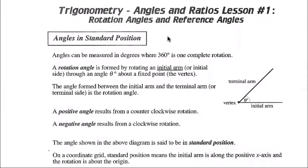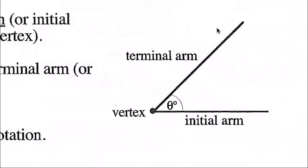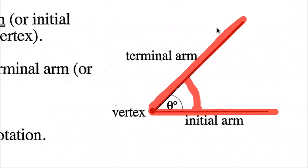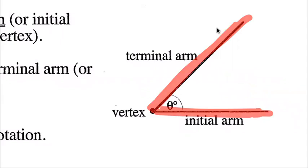A rotation angle is formed by rotating an initial arm, or initial side, through an angle theta about a fixed point, which is the vertex. So if we have this drawing of an angle, this is the initial arm, and this is the terminal arm through some degree rotation of theta. Remember theta — that fancy symbol, a circle with a line through it — that's our symbol for angle measurements. This is the terminal arm, and where those two meet is the vertex.